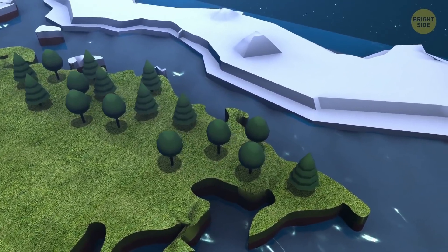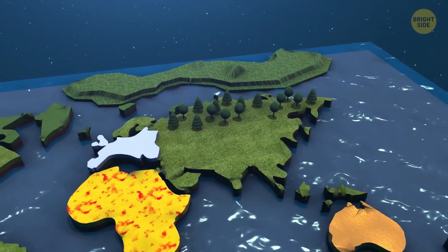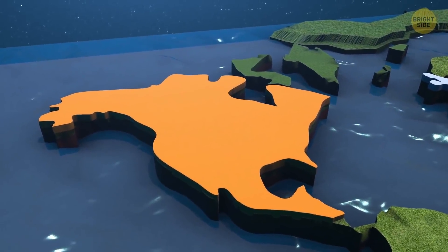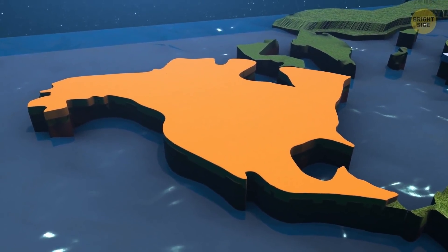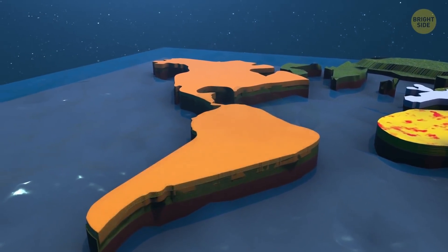Some areas of the world would become much greener than they are as we know them. Other regions, on the contrary, would turn into deserts. For example, North America would be nothing more than a dry dust bowl. In South America, the Amazon rainforest would get replaced by arid sand dunes.